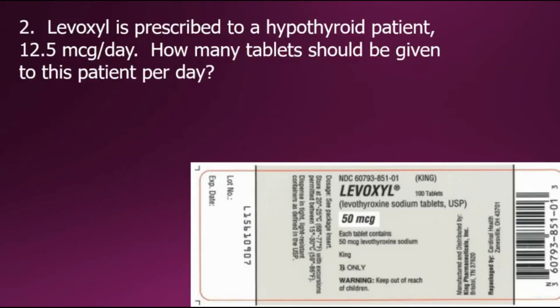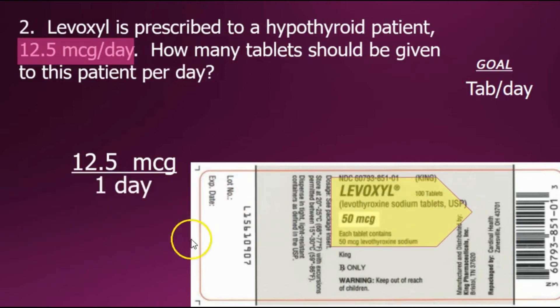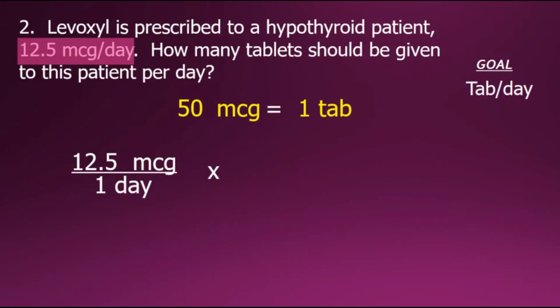In this next problem, Levoxyl is prescribed to a hypothyroid patient at 12.5 micrograms per day. How many tablets should be given to this patient per day? The question is asking for tablets, so we'll set that as our goal. Beginning with the doctor's order expressed as a fraction — 12.5 micrograms per day — and looking at the drug available on hand, the label shows there are 50 micrograms in each tablet. We'll use that relationship to convert from micrograms into tablets.